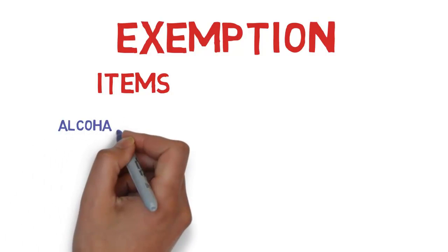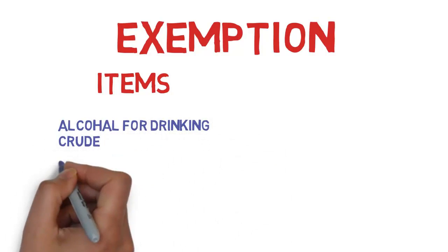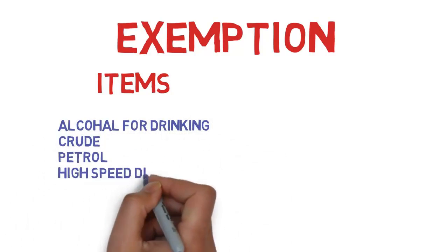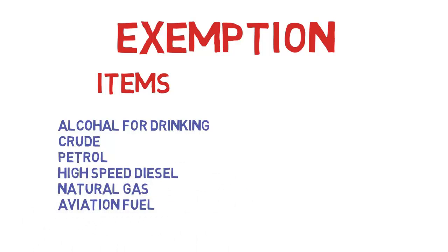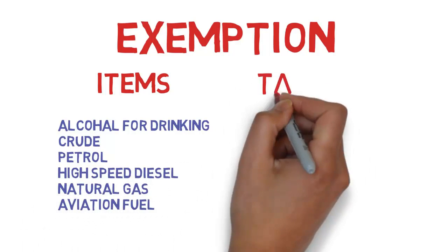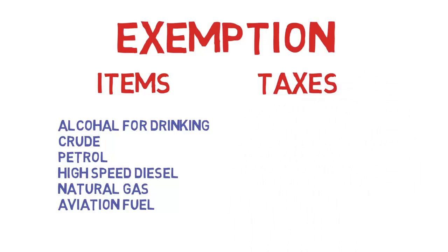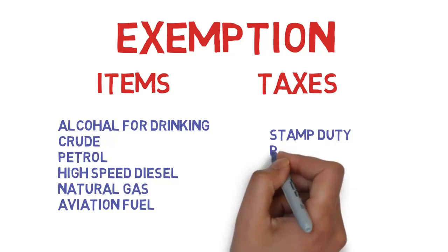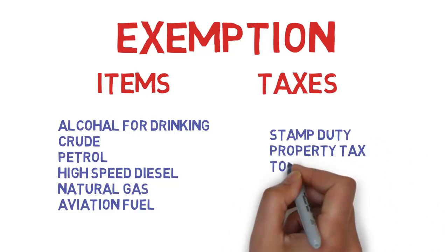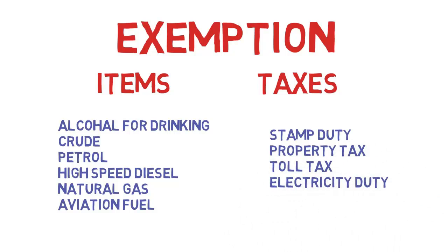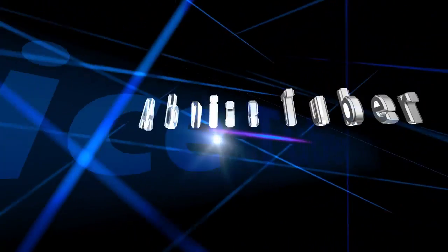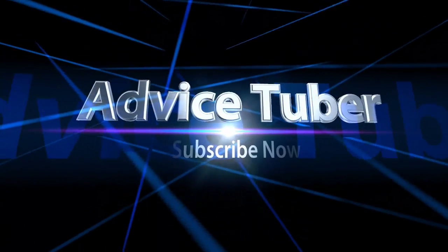Some items are exempted from GST: alcohol for human consumption, petroleum products like crude oil, petrol, high-speed diesel, natural gas, and aviation turbine fuel. Some taxes are also exempted, including stamp duty, property tax, toll tax, and electricity duty. Thank you for watching this video — please share, like, and subscribe to Advice Tuber.